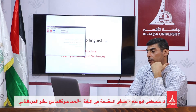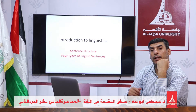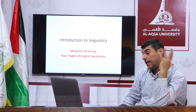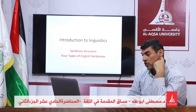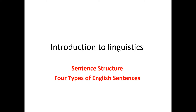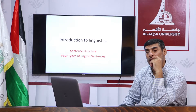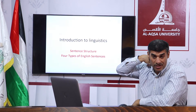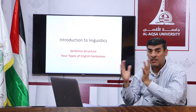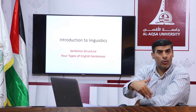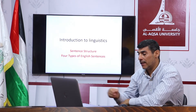As-salamu alaykum wa rahmatullahi wa barakatuh. I'm back again. We want to continue with our second part regarding syntax, and now we are swiftly moving on to sentence structures. We have four types of English sentence: the simple sentence, compound sentence, complex sentence, and compound complex sentence. As you have studied in Grammar 2 and Writing 2, the structure of the sentence becomes complicated — the more we add clauses, the more the sentence becomes complicated.